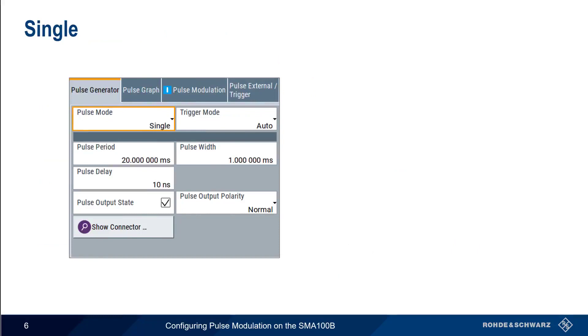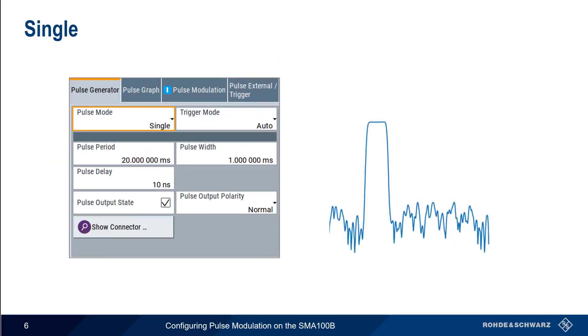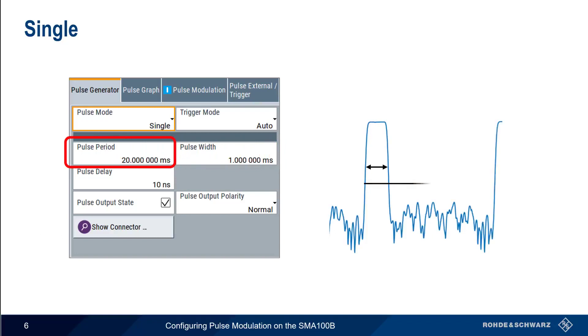As the name implies, Single Pulse Mode sends a single pulse with a given pulse width and a given pulse period or repetition interval between the pulses. Keep in mind that the pulse width must be shorter than the pulse period.